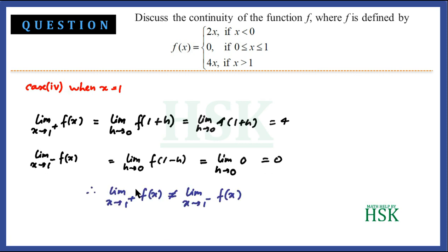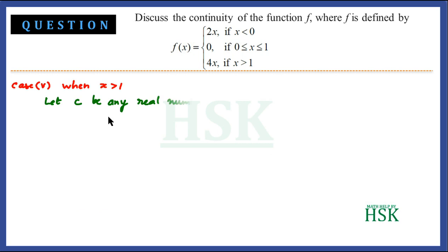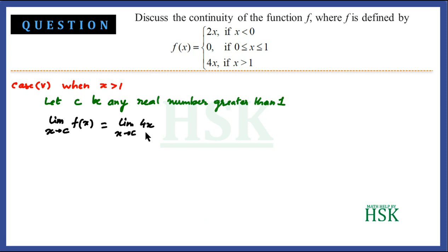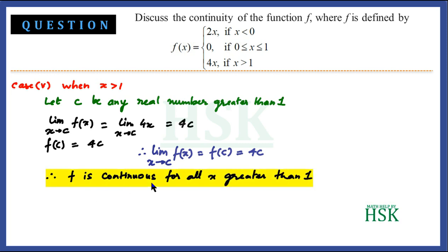The right-hand limit (4) and left-hand limit (0) are unequal, so the function is discontinuous at x = 1. For the last case, x > 1: let c be any real number greater than 1. The limit of f(x) as x tends to c equals the limit of 4x = 4c, and f(c) = 4c. So the limit equals f(c) = 4c, and f is continuous for all x > 1.